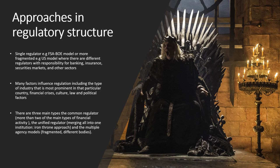Number one: the common regulator, which covers more than two of the main types of financial activity. Number two: the unified regulator — the one sitting on the Iron Throne above all the kingdoms, like Daenerys' father in Game of Thrones ruling the Seven Kingdoms. I call it the Iron Throne approach. And then number three: the multiple agencies model, which you see in America, fragmented with different bodies.